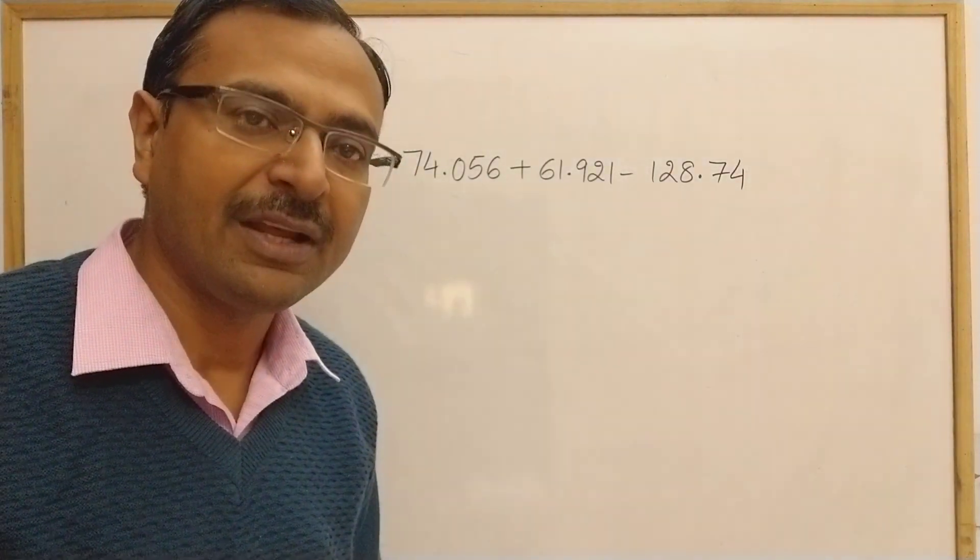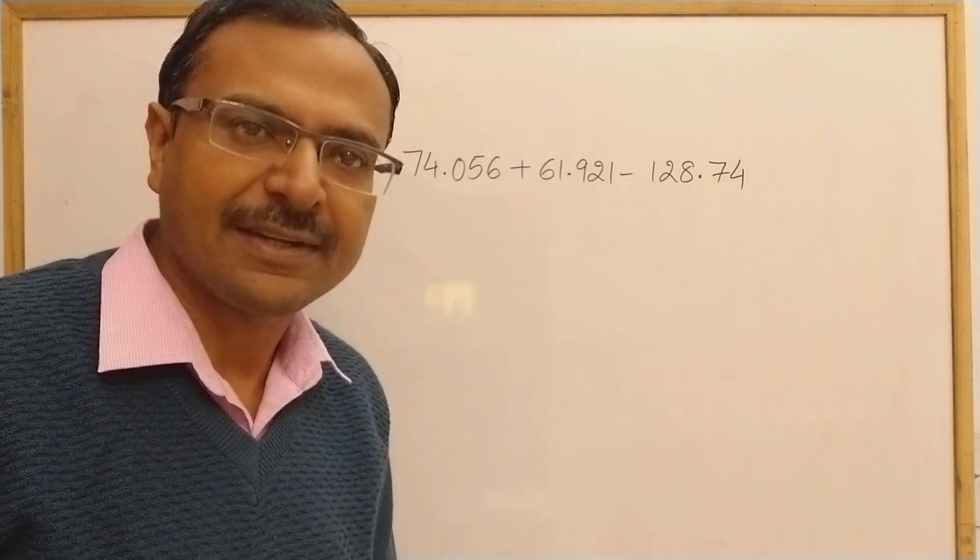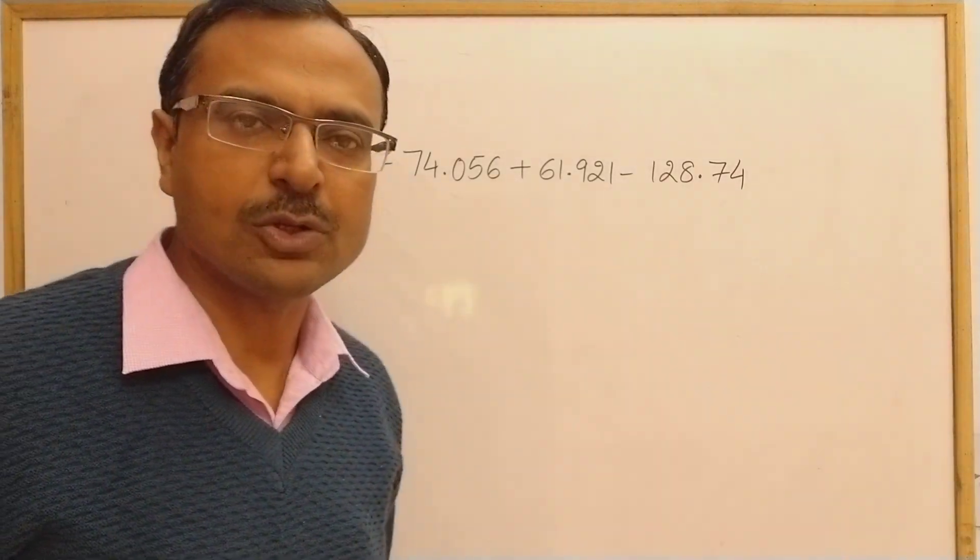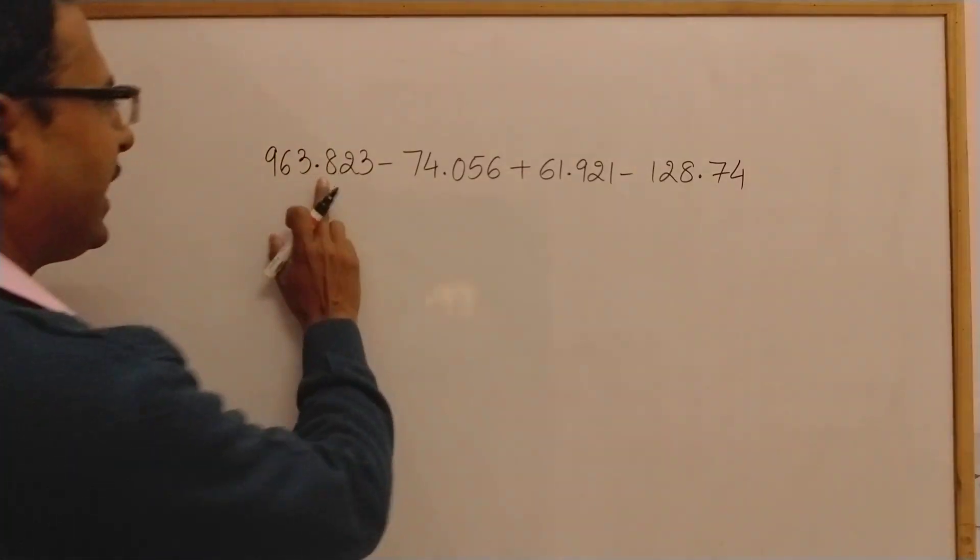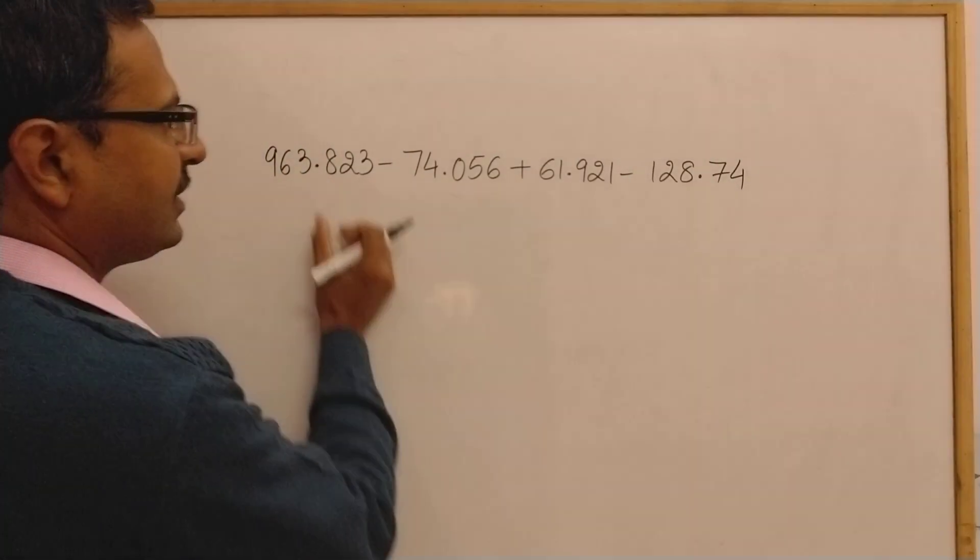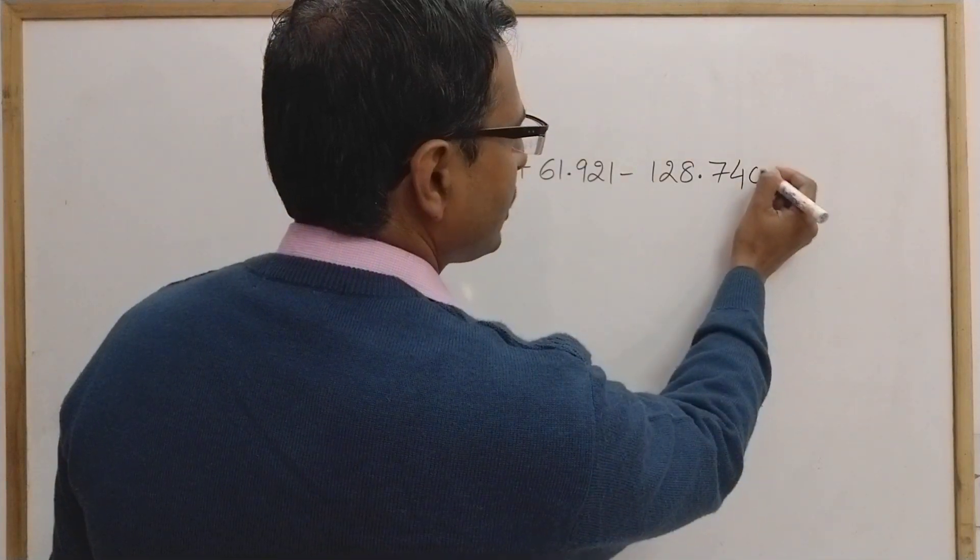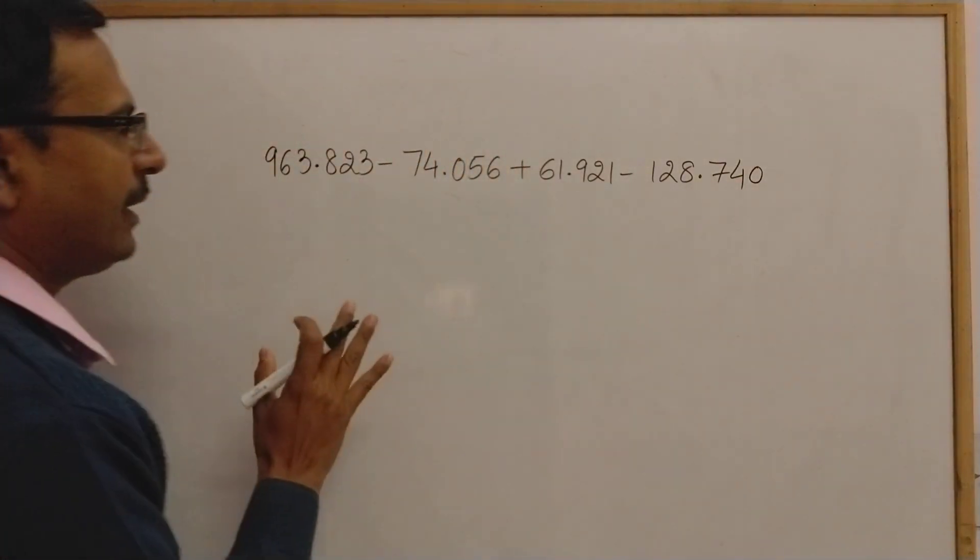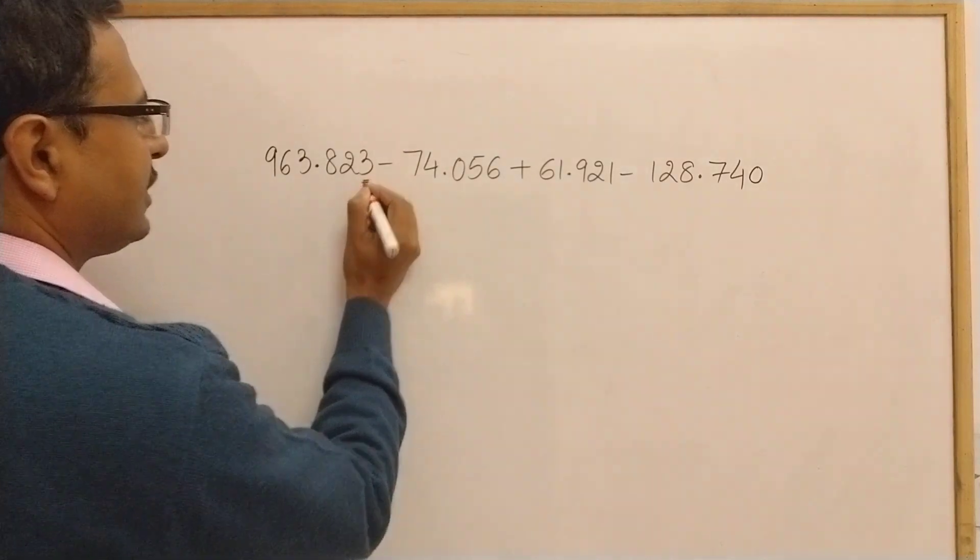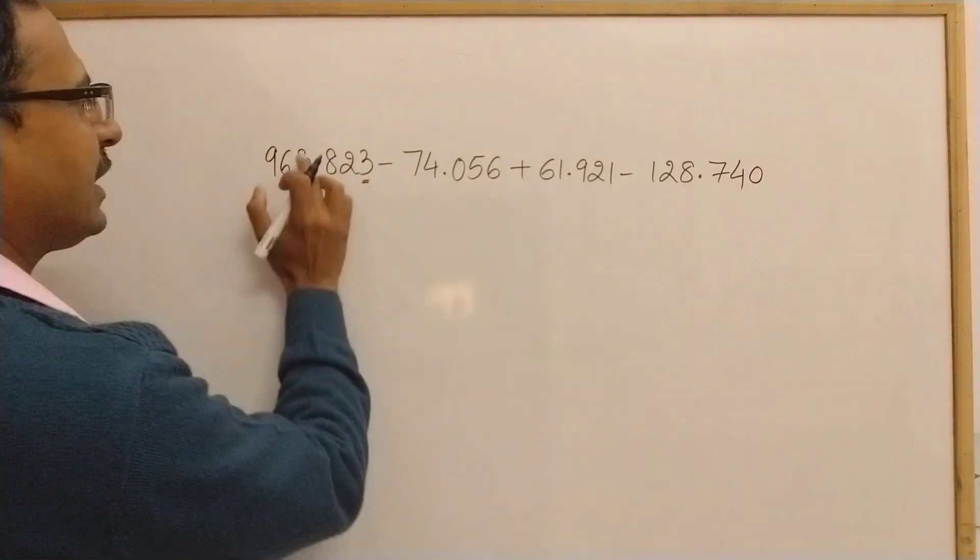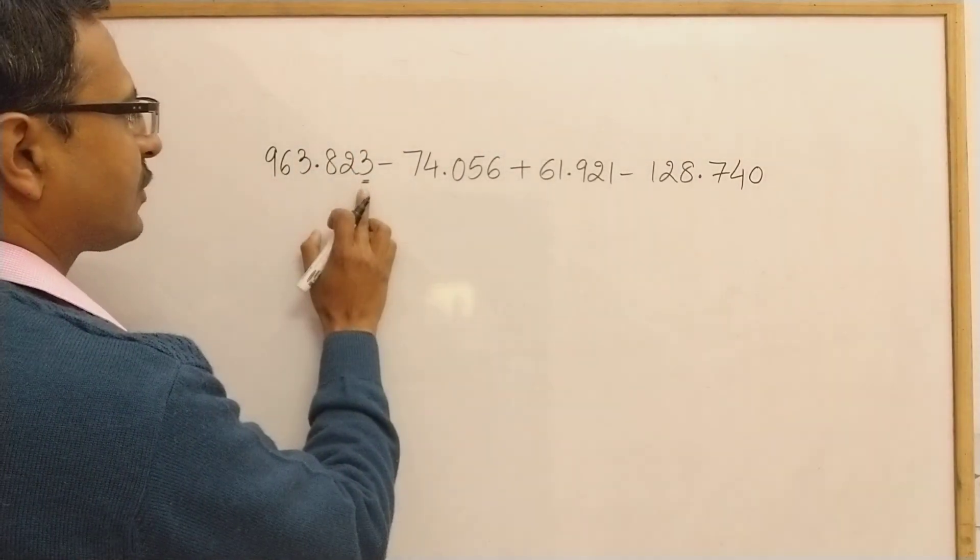Let's see the method here. After decimal I have three digits here, three here, three here, but I have only two here so I'll put a zero here. Now I will combine the first digit from the right side irrespective of the decimal place, first digit from the right hand side, and then carry on adding or subtracting according to the sign which is there in between.